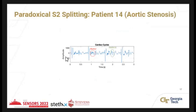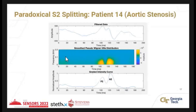Murmurs are a concern in patients with valvular heart disease, as they can interfere with S2 sound capture. However, in this example, despite murmur artifacts visible in the data, we were still able to capture A2 and P2 by using instantaneous frequency and instantaneous amplitude analysis, successfully demonstrating paradoxical splitting in that patient.